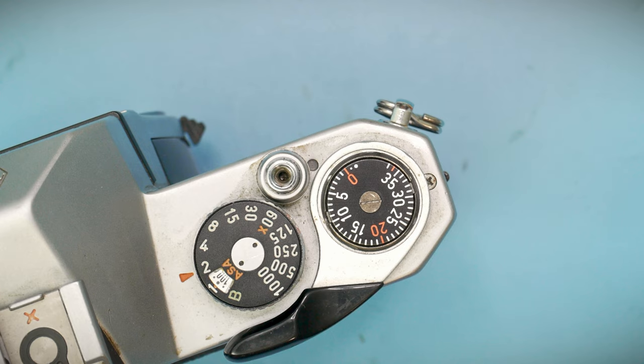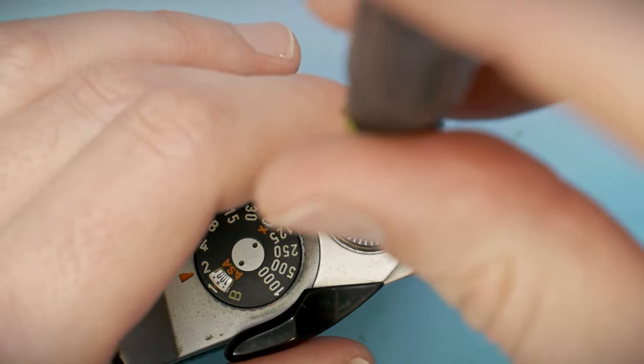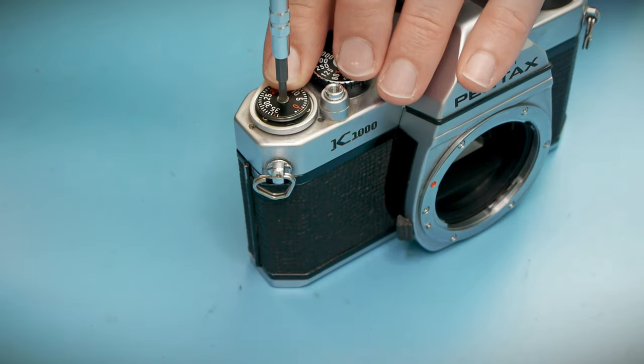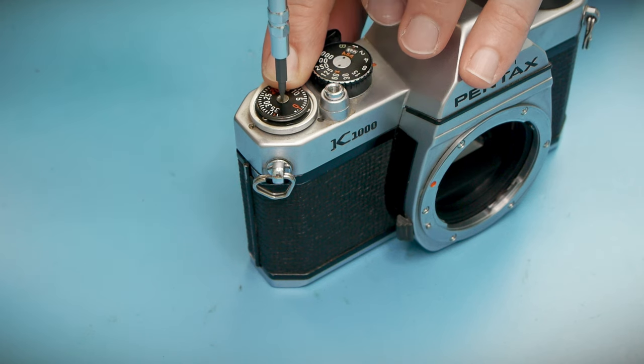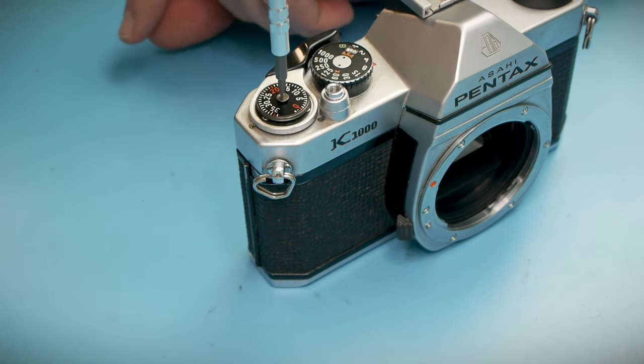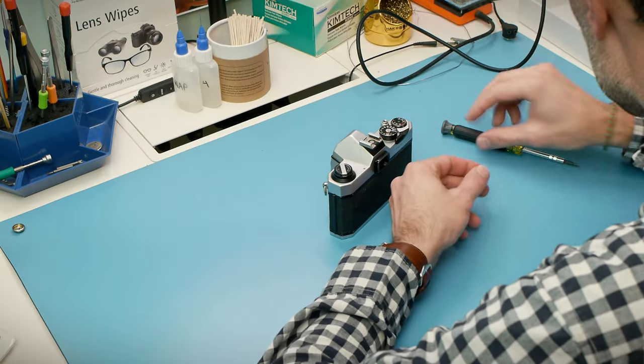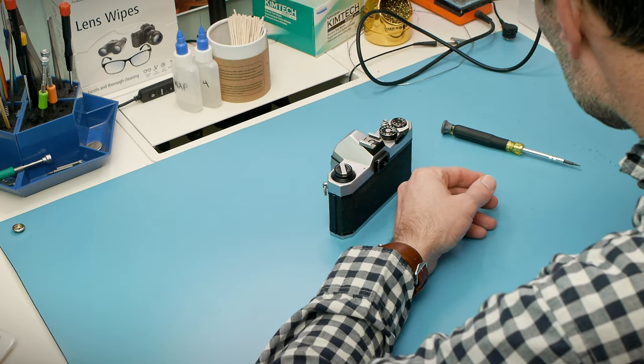Next is the screw for the counter dial, which importantly is left hand threaded. It's very common for screws on the axis of turning parts to be reverse threaded, so I always try to figure out what those are before I attempt to remove them. Preferably from the service manual, but sometimes a forum search will have the information I'm looking for too.